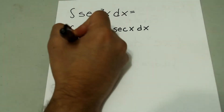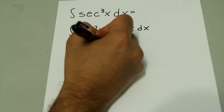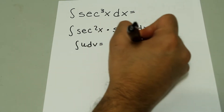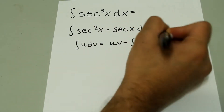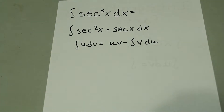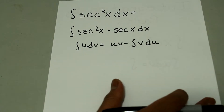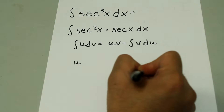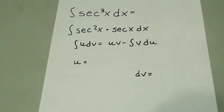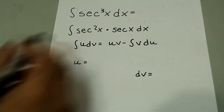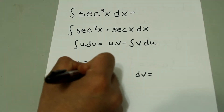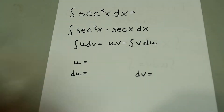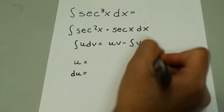So we know we have to use this form: integral of dv equals uv minus integral of v du, which is just the integration by parts formula. We have to figure out what our u is and what our dv is. Recall that u has to be the one that's easy to differentiate, because we're going to get du out of that, and dv is going to be the one that's easy to integrate, because we're going to get v out of that.